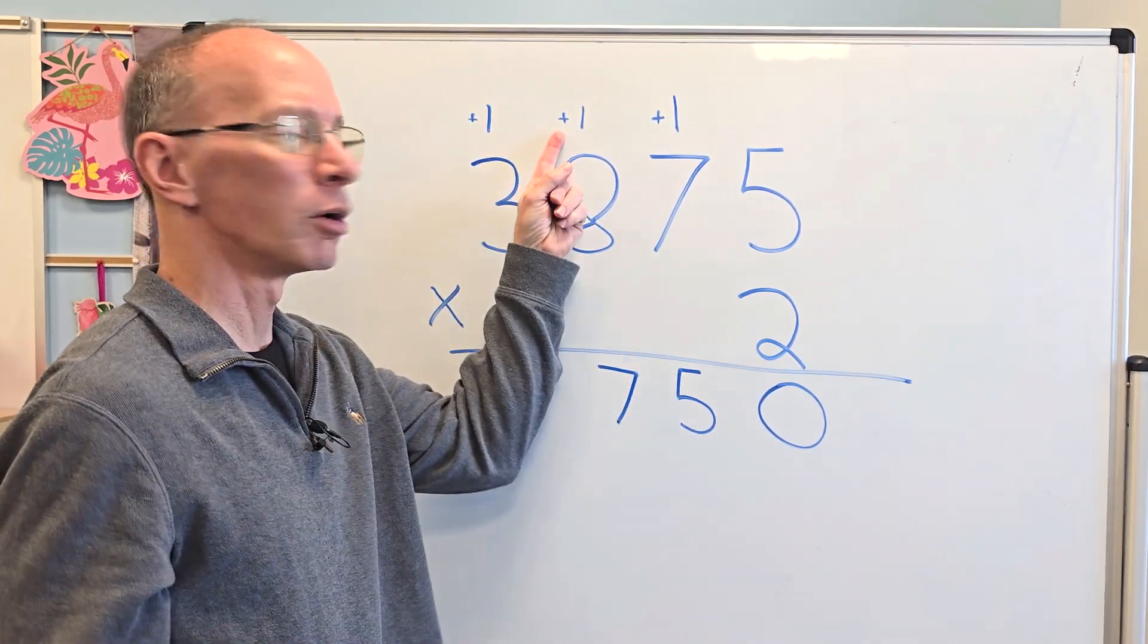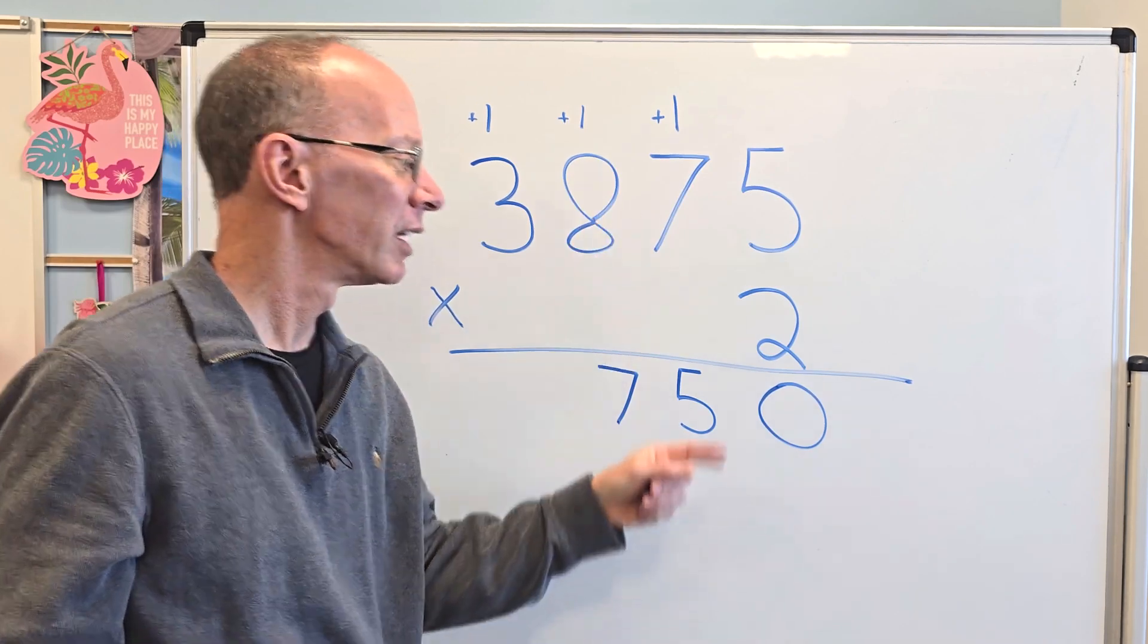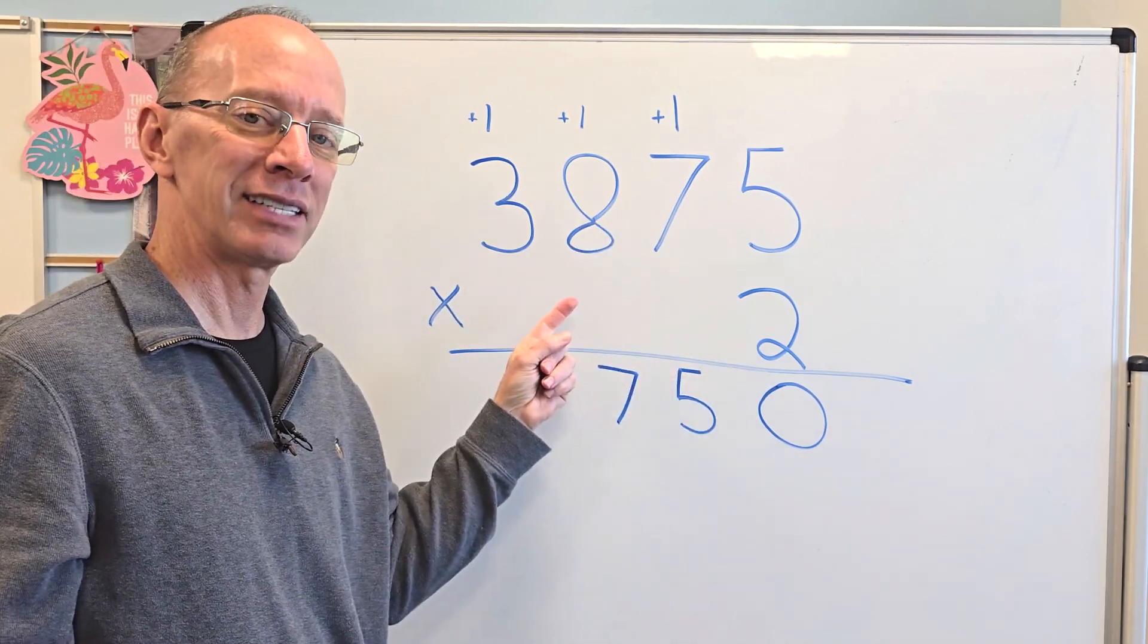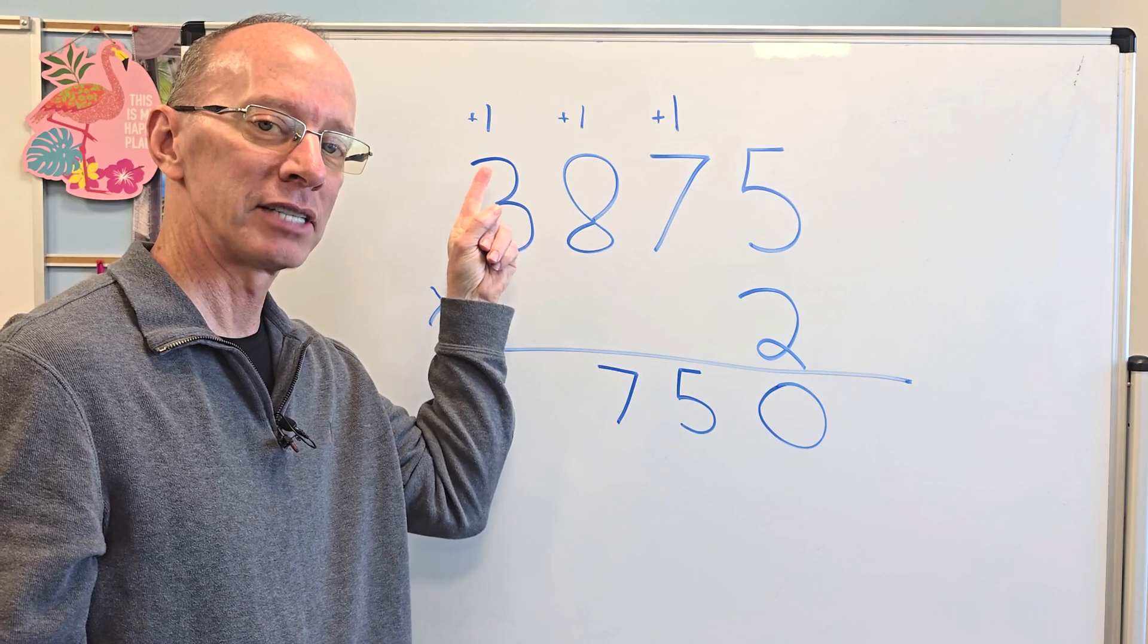And if you want to, you can put the little plus sign there. Later on, you're not going to have to do that. 2 times 3, 6. Yeah, you got it. Plus that 1, 7.